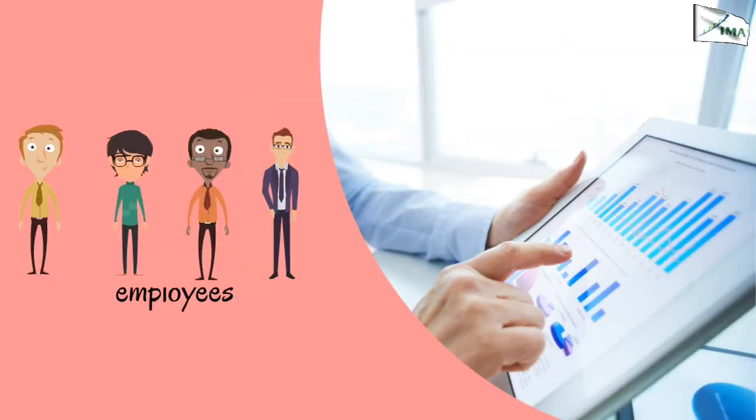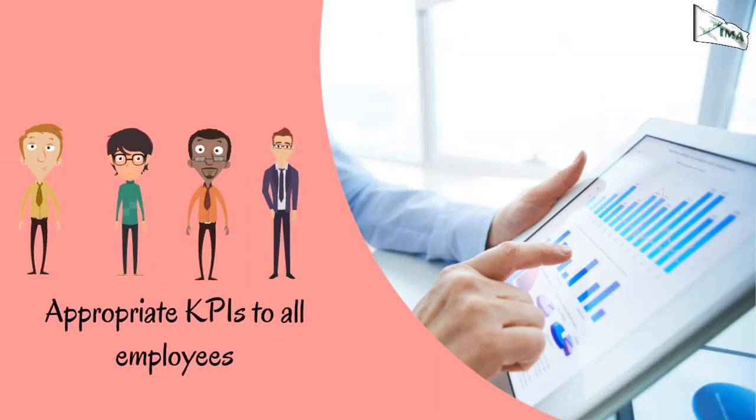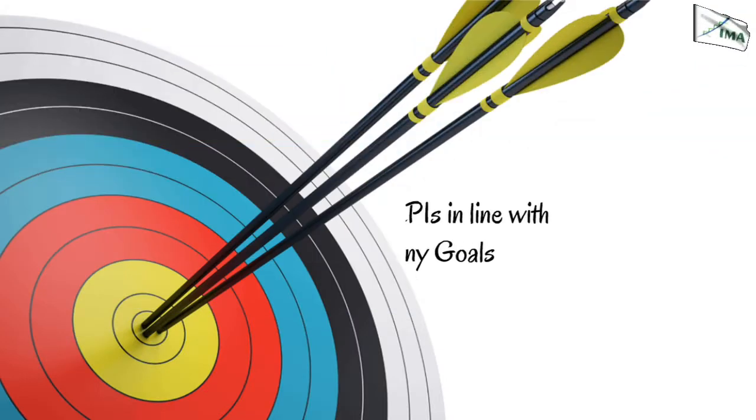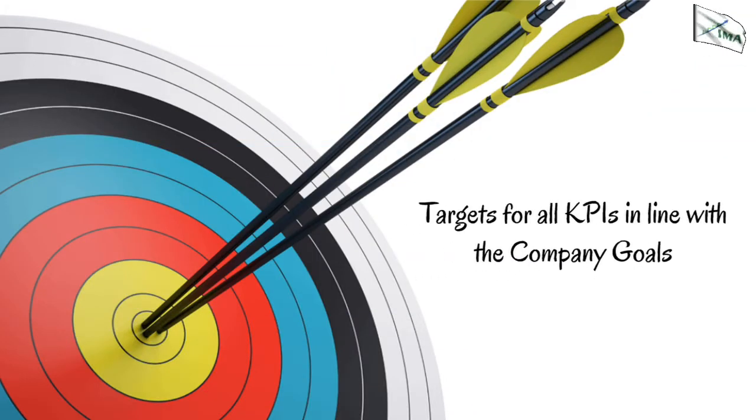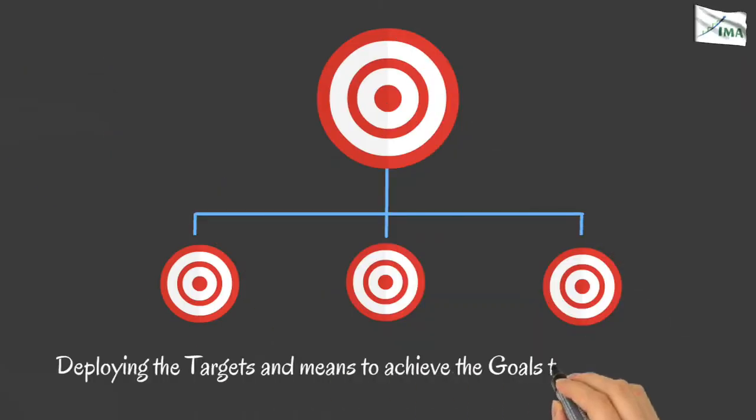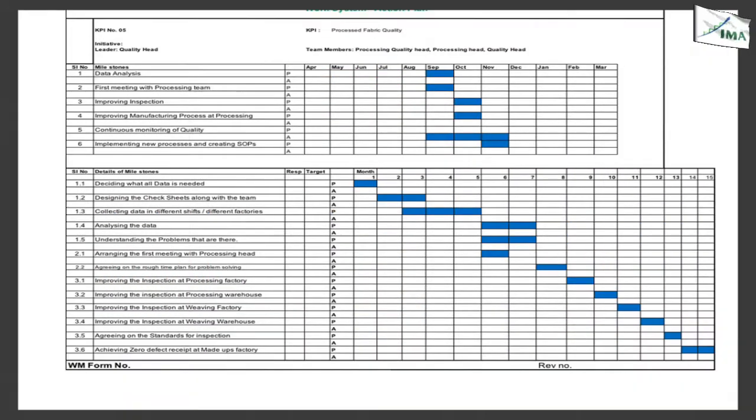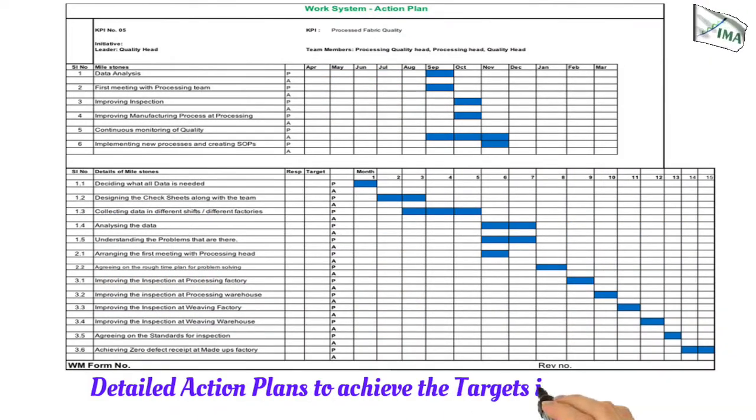Appropriate KPIs to all employees, targets for all KPIs in line with the company goals, deploying the targets and means to achieve the goals to the team members, detailed action plans to achieve the targets in the year. This will ensure that the employee pays attention to the resources needed and also the ways and means to achieve the targets.